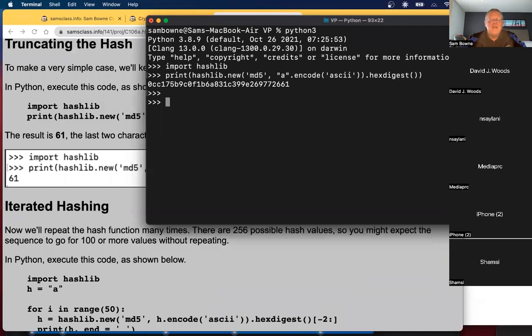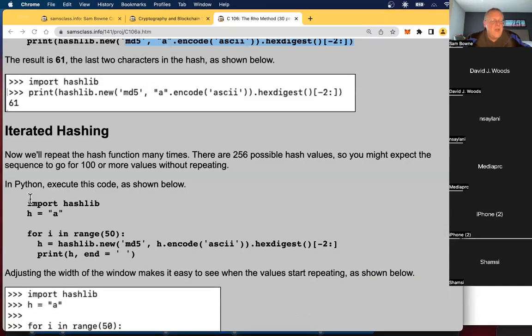So we do it this way. Now I keep just the last two digits, 61. So now I have a real short hash. It's only one byte long. So there's only 256 possible values. So now we can try that hash of a hash of a hash and see the rho method. So we run this.